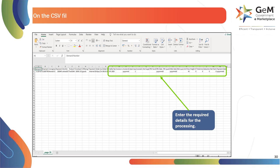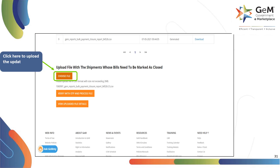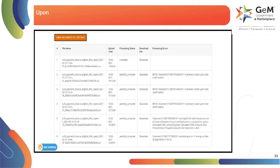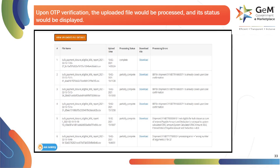On the CSV file, update the requested information for processing. Click on choose file to upload the updated CSV file. Click on verify with OTP and process file to further process the file. Once the OTP verification is done, the uploaded file would be processed and its status would be displayed.